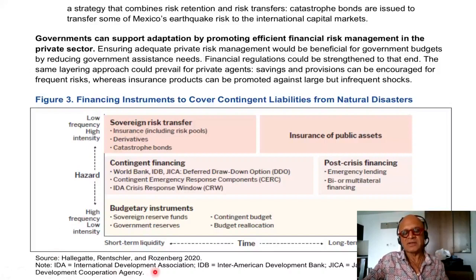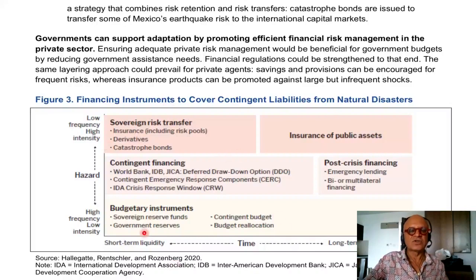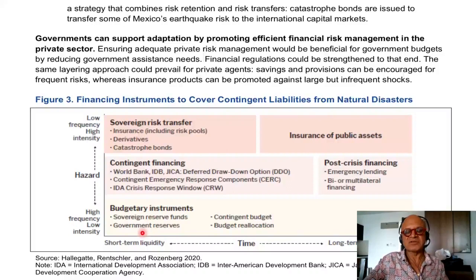International Development Association, Inter-American Development Bank, and Japan International Development Cooperation Agency are mentioned here. At the high-frequency low-intensity and short-term liquidity end, you have budgetary instruments to ensure financing instruments to cover contingent liabilities from natural disasters — sovereign reserve funds and government reserves. But as you go towards longer time horizons, you need contingent budgeting and budget reallocation.